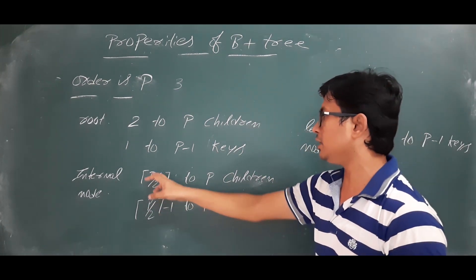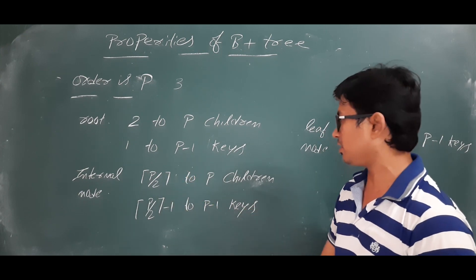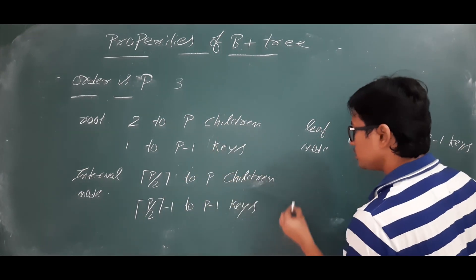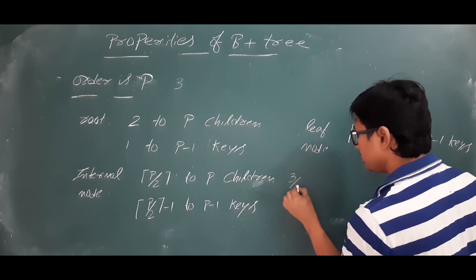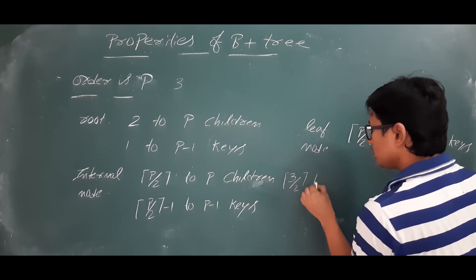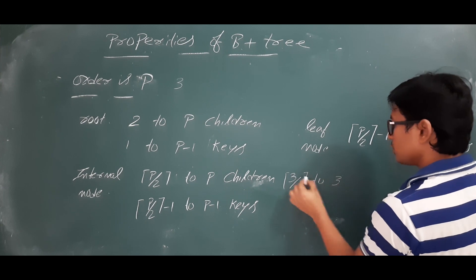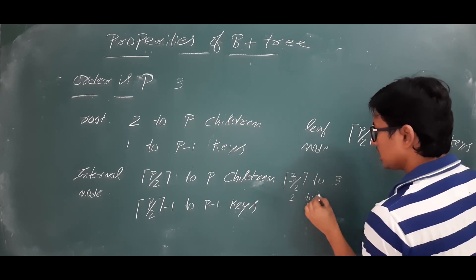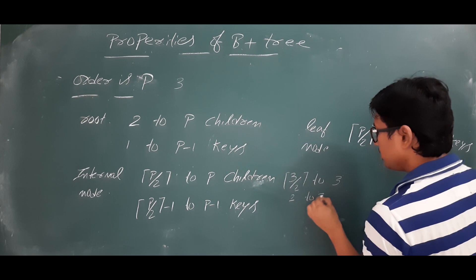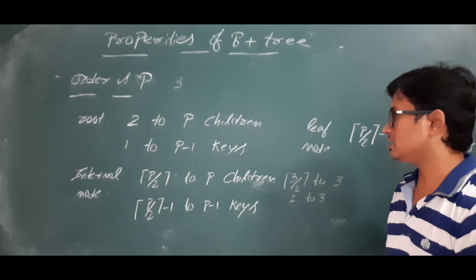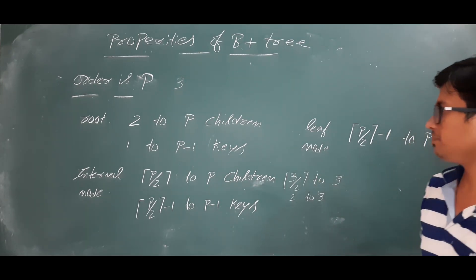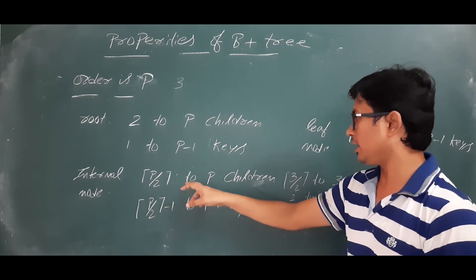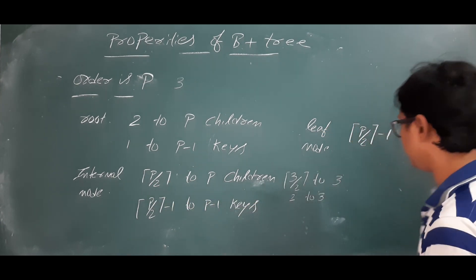For an internal node, the minimum number of children is ⌈p/2⌉ and maximum is p children. If p equals three, then ⌈3/2⌉ equals two, so the minimum children is two and maximum is three. The number of keys is one less than the number of children, since you can observe from the node structure.